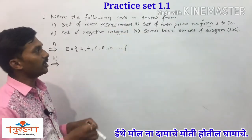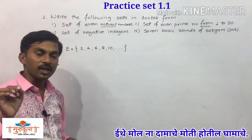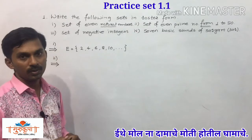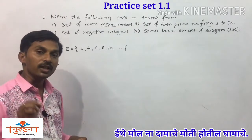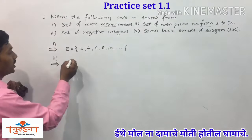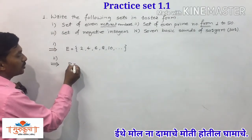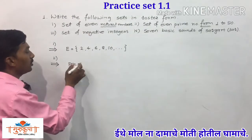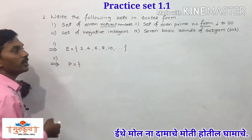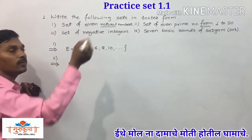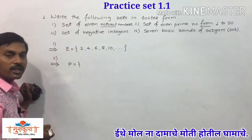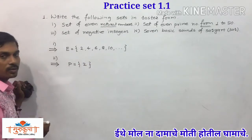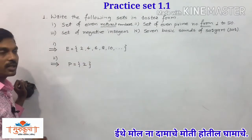We know that there is one and only one even prime number, and that is 2. So here we can write P equals, into the curly bracket, the list of all even prime numbers from 1 to 50. Since there is one and only one even prime number, which is 2, the answer is P = {2}. This is the answer to the second example.